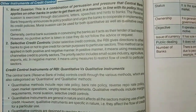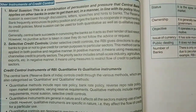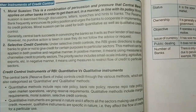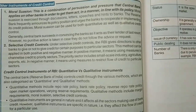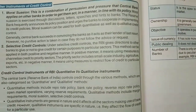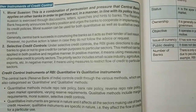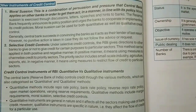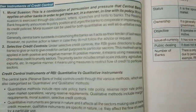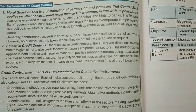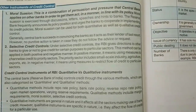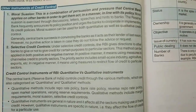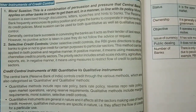Under other instruments of credit control, the first is moral suasion. Moral suasion is a combination of persuasion and pressure that the central bank applies on other banks in order to get them to act in a manner in line with its policy. There are certain policies which commercial banks must follow. Moral suasion is exercised through discussions, letters, speeches, and hints to banks. The Reserve Bank frequently announces its policy position and urges banks to cooperate in implementing its credit policies.